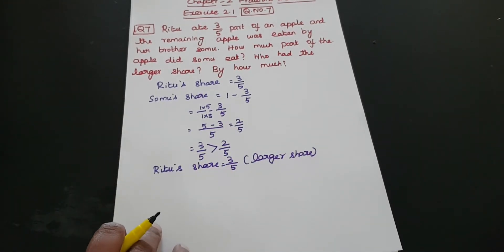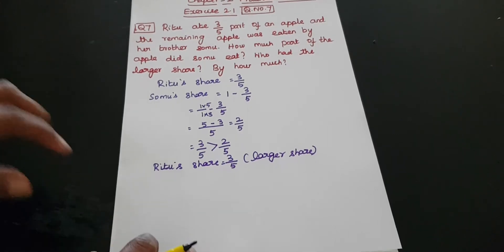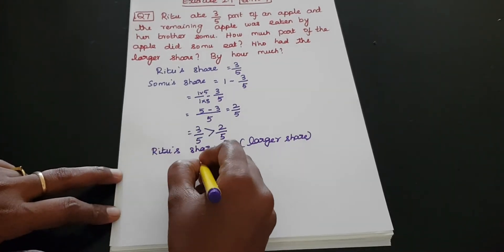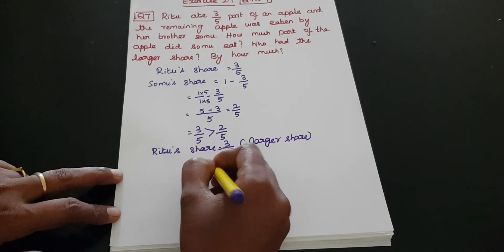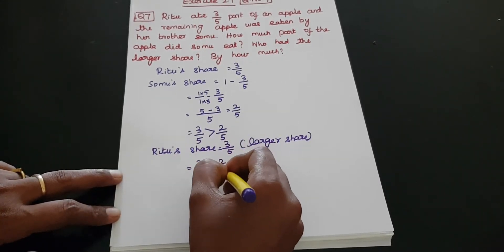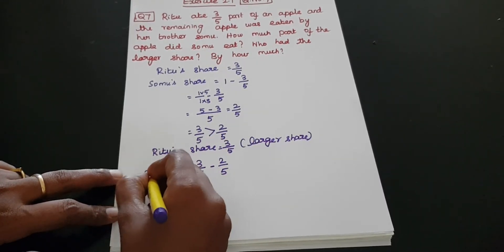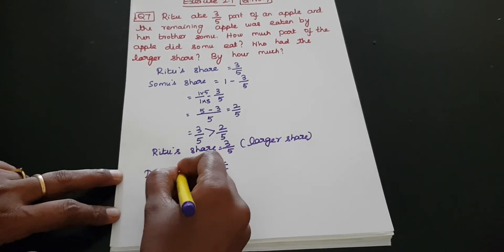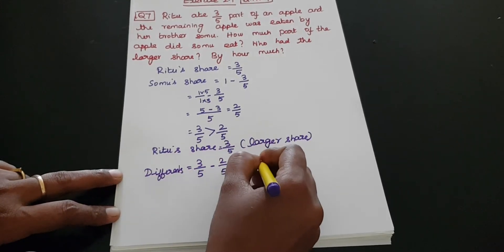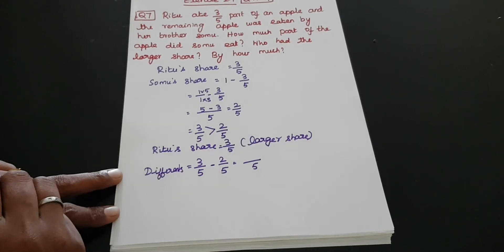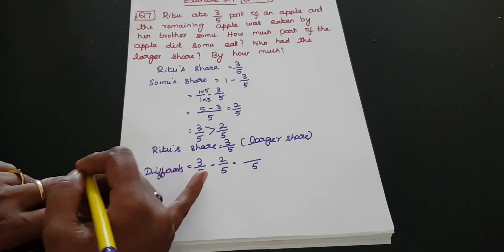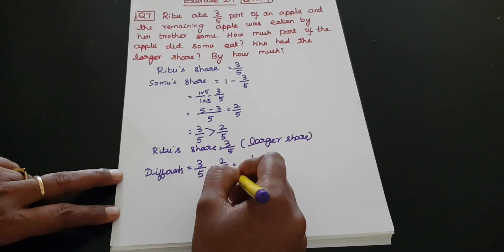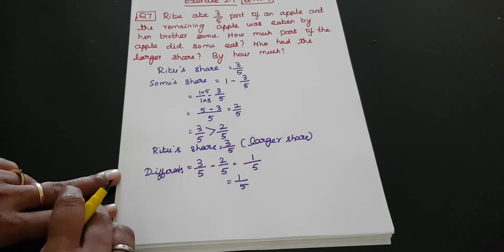By how much? We have to find out the difference. Reeta's share is 3 by 5 and Somu's share is 2 by 5. The difference is 3 by 5 minus 2 by 5. Both denominators are equal to 5, so the difference is 1 by 5.